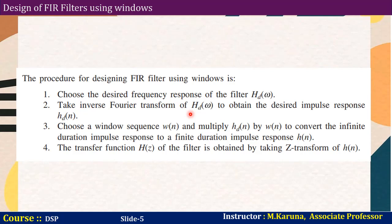Let us see the procedure for designing a FIR filter using windows. First step: choose the desired frequency response of the filter, HD of omega. Second step: take the inverse Fourier transform of HD of omega to obtain the desired impulse response HD of n. Third step: choose a window sequence and multiply HD of n by the window sequence to convert the infinite duration impulse response to a finite duration impulse response h of n. Last step: the transfer function H of z of the filter is obtained by taking the Z-transform of h of n.